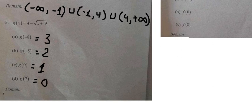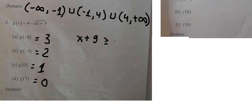For the domain of number three, we know that this expression is under a square root, so s plus nine must be greater than or equal to zero. Therefore s is greater than or equal to negative nine. The domain should be like this.